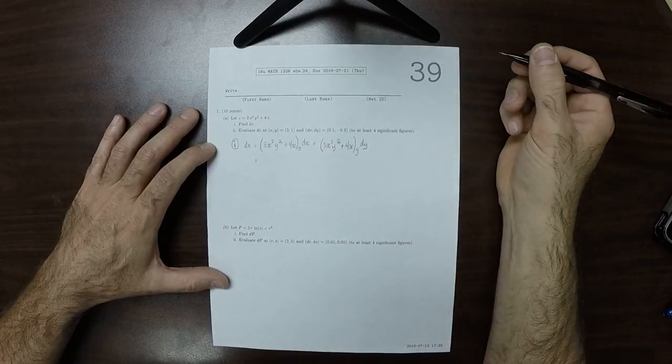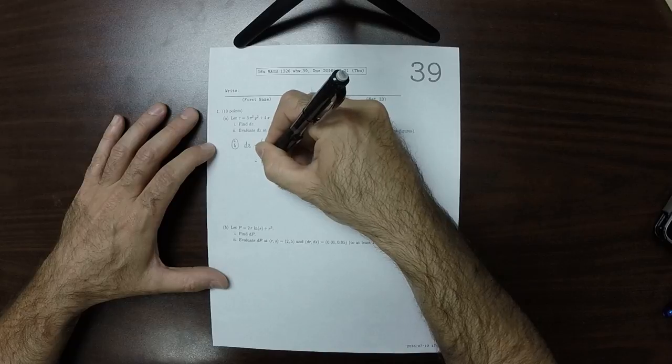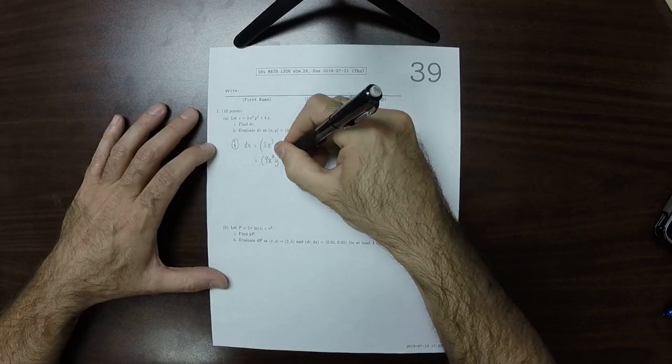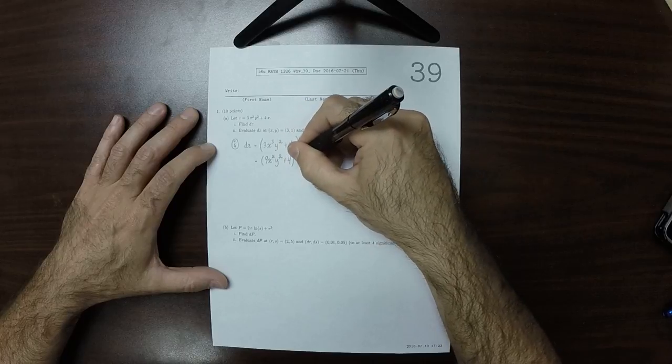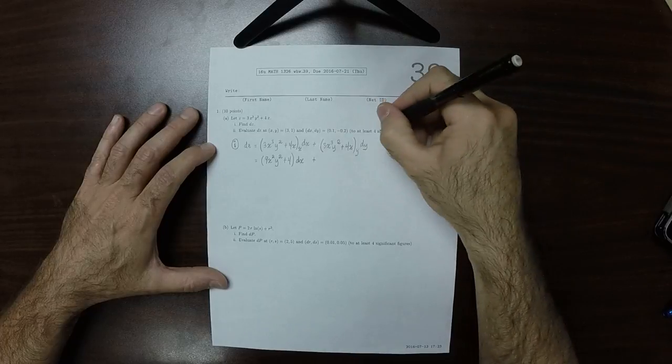And the x partial of this is 9x squared y squared plus 4 times dx, plus the y partial of this.